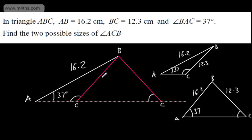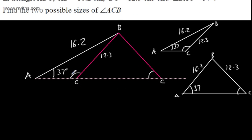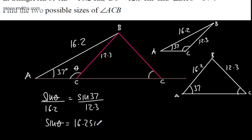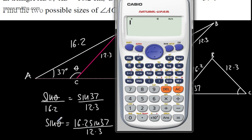What I'm going to do is set up the sine rule. I'm going to label this theta. Using the sine rule, the sine of theta over 16.2 will be equal to the sine of 37 degrees over 12.3. We've seen this in the sine rule video before. So multiplying by 16.2, sine of theta is going to be 16.2 sine of 37 degrees over 12.3.